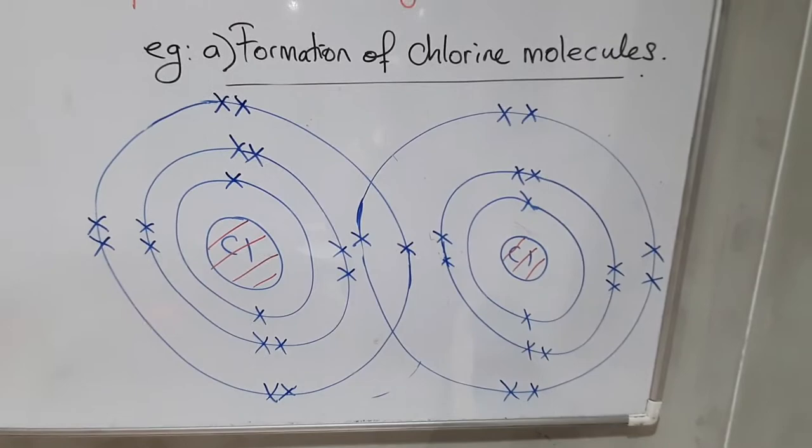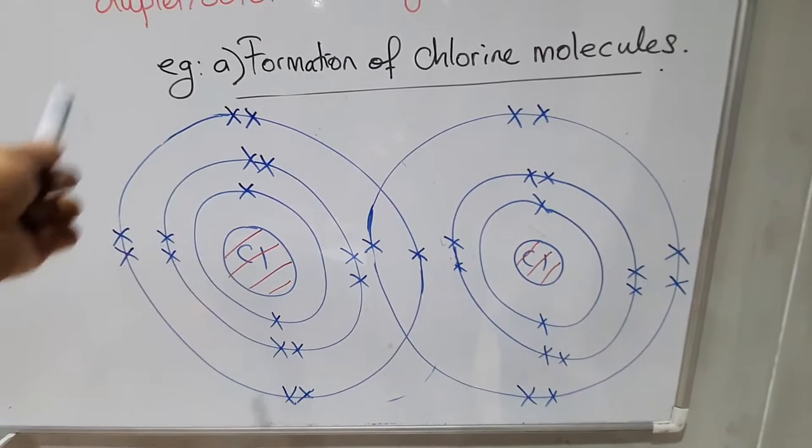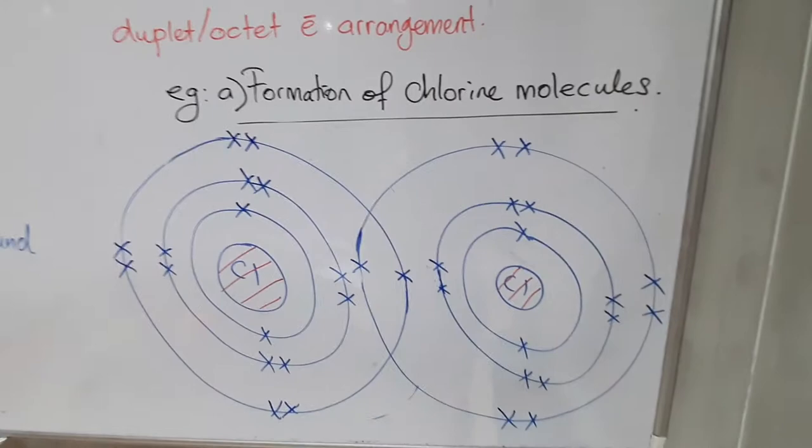Now let's look at the electronization diagram for formation of chlorine molecules. As you can see here, when we are talking about sharing, you can see the valence shell of each atom must overlap. I suggest to you: always when you want to draw, please draw the outermost shell overlaps first, then go inward and complete the atoms.